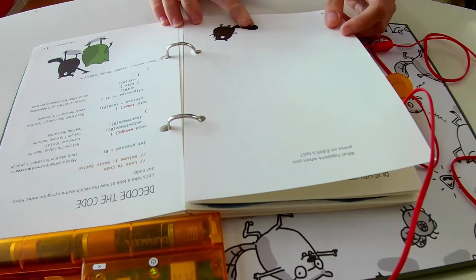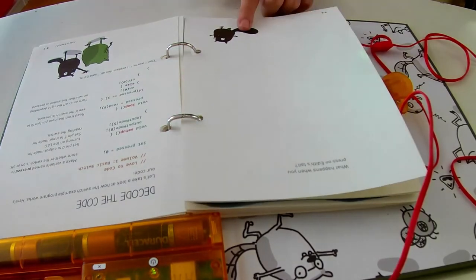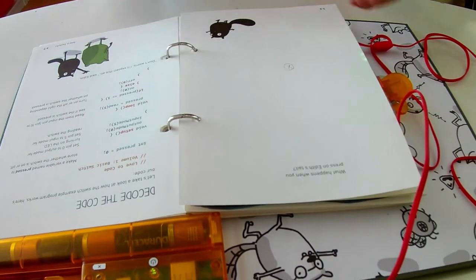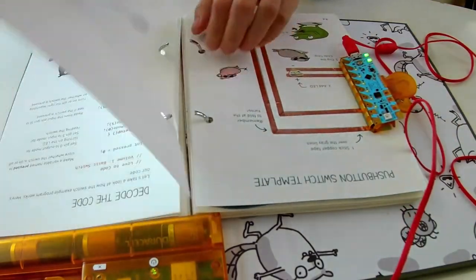We're not done yet! What happens when you press on Edith's tail? Flip the page and circle the position of the light, and remove the page from the book so that we can draw a scene.